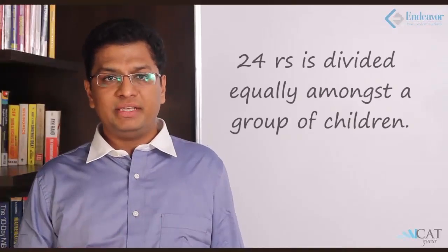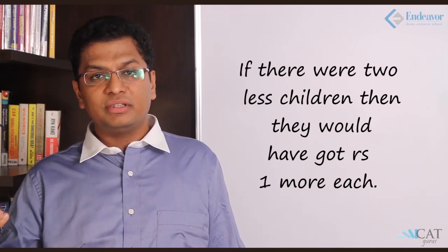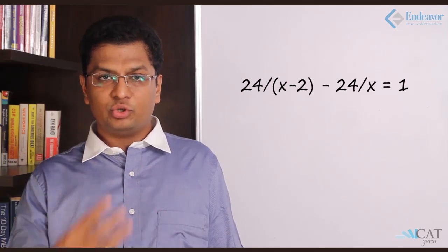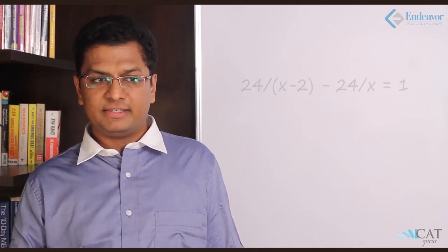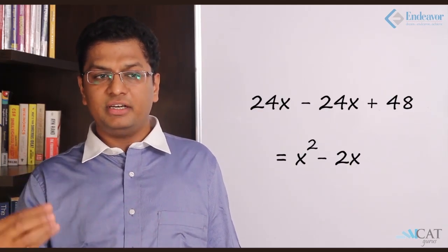Let us take another example. 24 rupees is divided equally amongst a set of children so that they get whole numbers. If there are 2 fewer children, each gets 1 rupee more. So 24/(x - 2) is 1 more than 24/x. This gives the equation 24x - 24x + 48 = x² - 2x, and solving we get x = -6 and x = 8. Alternatively, we find factors of 24: 1, 2, 4, 6, 8, 12 — where 6 and 8 are close, with 24/6 = 4 and 24/8 = 3, a difference of 1. So the numbers are 8 and 6.